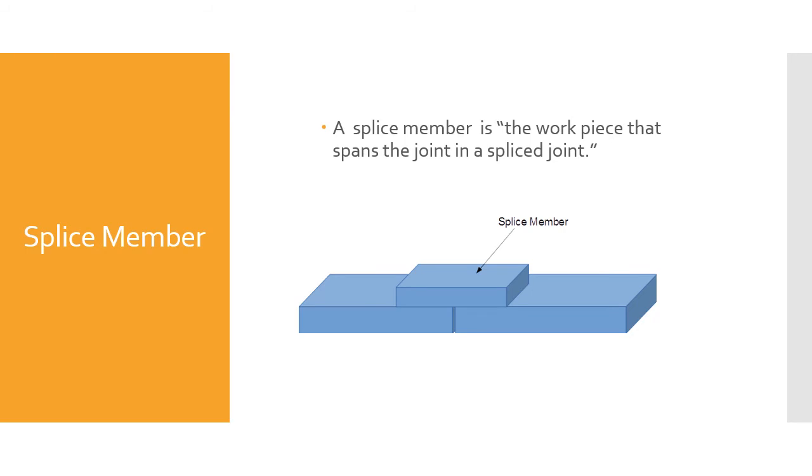A splice member is the work piece that spans the joint in a spliced joint. You can see the splice member - it's like a splint. We're not joining the two members together, we're using a splice member to join the two members together.